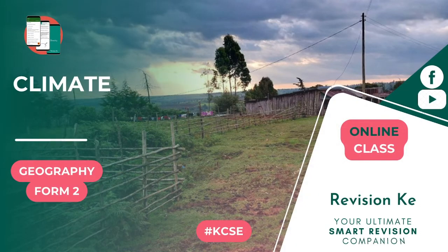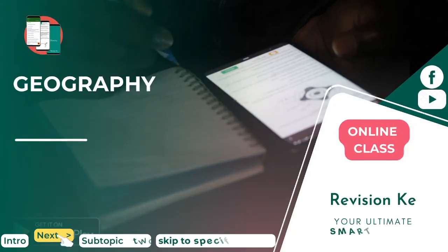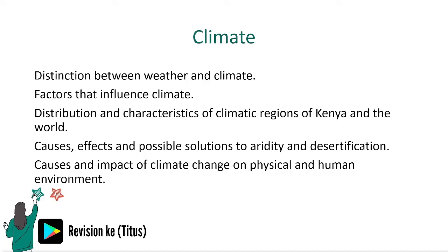This is our next topic: Climate, a Form Two topic, and there is quite a lot to cover. You can make use of the subtitles at the bottom of your video frame. We are going to cover the distinction between weather and climate, factors that influence climate, distribution and characteristics of climatic regions of Kenya and the world, causes and effects and possible solutions to aridity and desertification, and finally causes and impact of climate change on the physical and human environment.